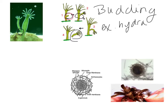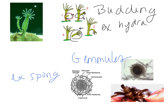Another example is what are called gemmules. An example of an organism that does this would be a sponge. What happens here is the parents are going to release basically a hunk of cells — specialized enough that they are able to develop into an offspring. They release this large clump of specialized cells that will then develop into the offspring.